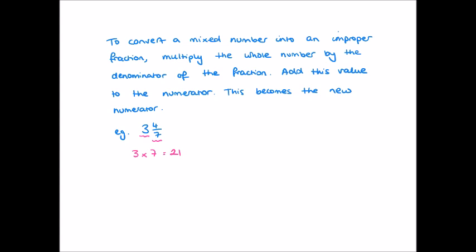That essentially tells us that 3 wholes contain 21 sevenths. Next, we take this value and we add it to the numerator part of our fraction. So that's 21 plus 4, which is equal to 25. That tells us then that we have 25 sevenths. The denominator part, as always, remains unchanged. And so 3 and 4 sevenths is equal to 25 sevenths.